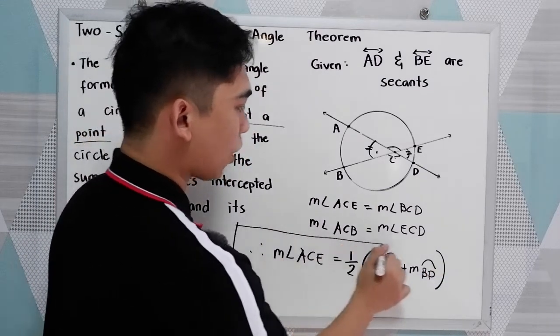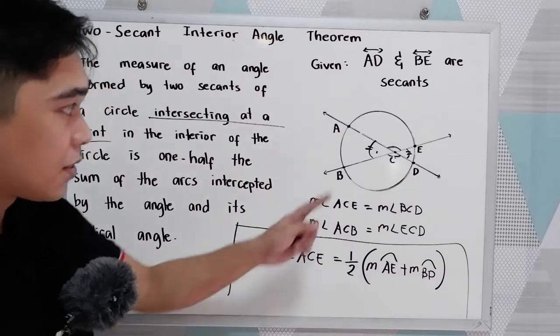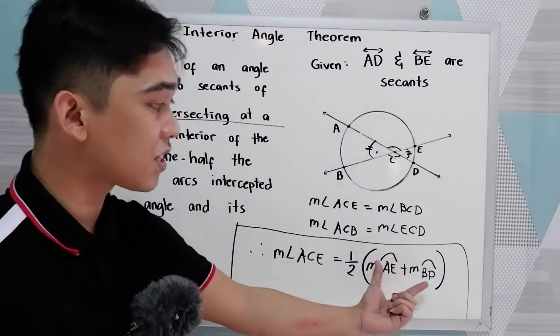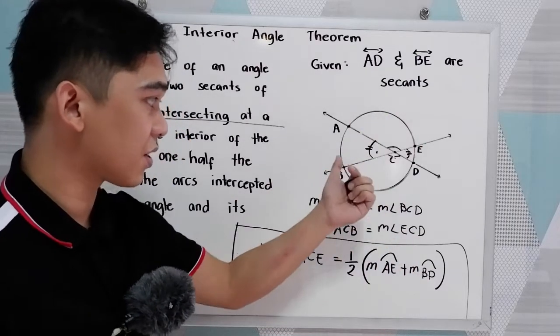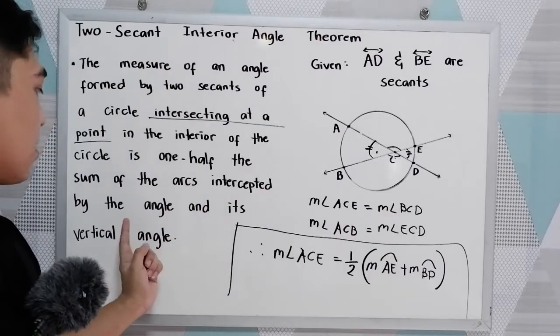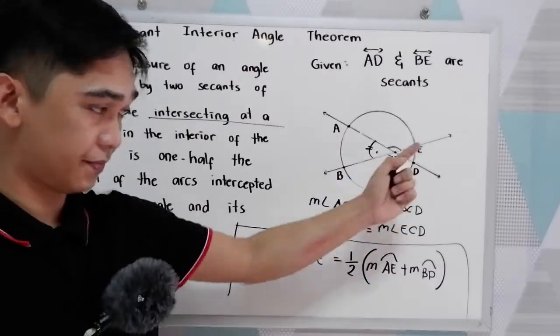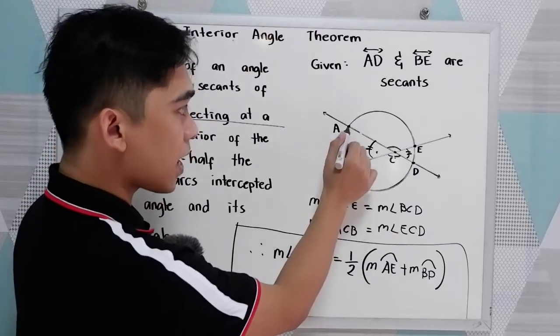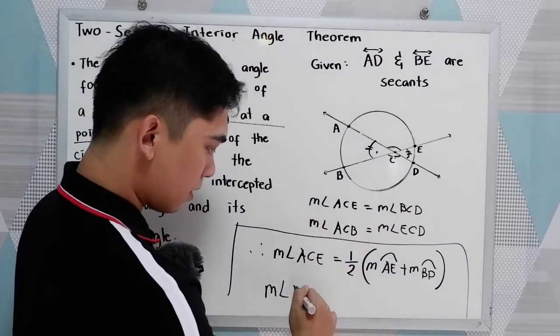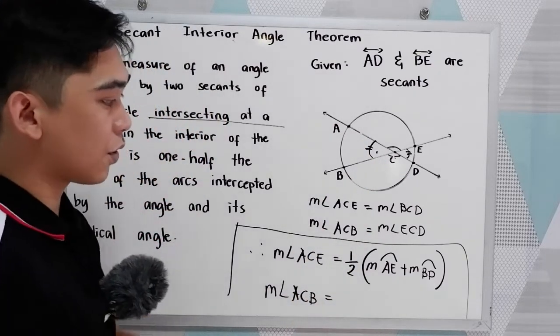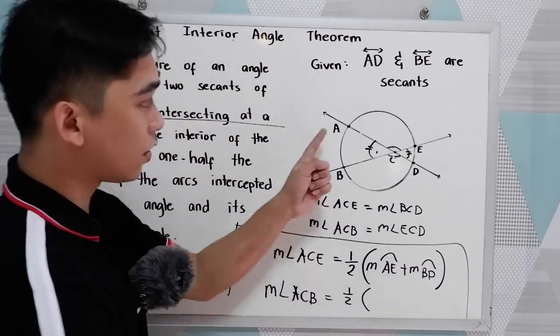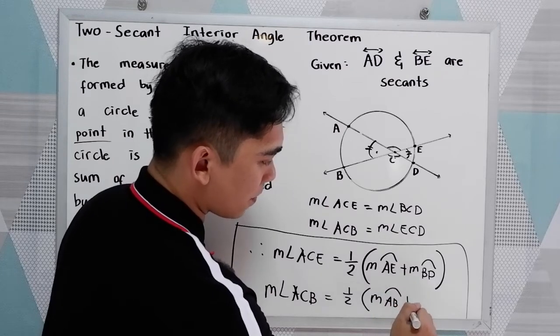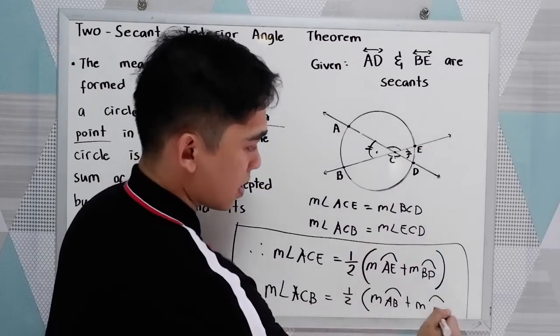That would be our conclusion. Again, let us repeat, the measure of angle ACE is half the measure of the sum of its intercepted arcs by the vertical angle. And of course, to get the measure of angle ACB, that is equal to one-half of arc AB plus the measure of arc ED.